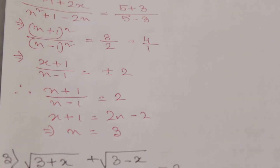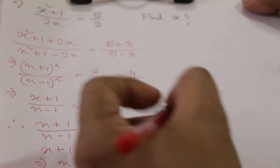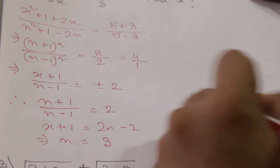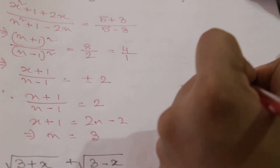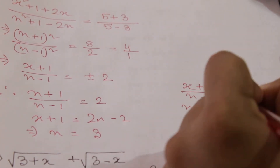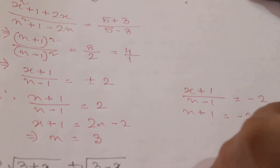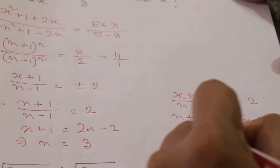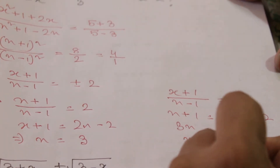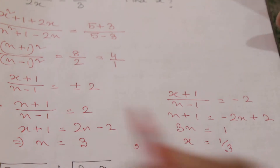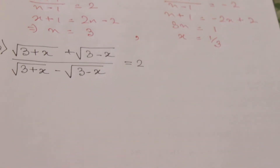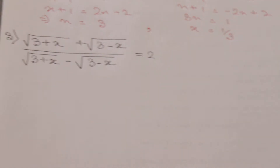Then taking the negative value: (x + 1)/(x - 1) = -2, so x + 1 = -2x + 2, giving 3x = 1, and x = 1/3. So the two values are x = 3 and x = 1/3. This will be our last example.